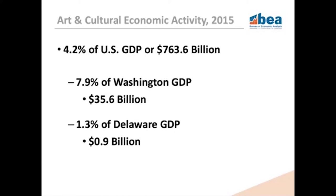According to the estimates most recently released on March 7th of this year, arts and cultural economic activity accounted for 4.2% of U.S. GDP, or $763 billion in 2015. To put that in perspective, compare that to the utilities industry at 1.6%, the mining industry at 1.8%, transportation and warehousing at 3%, construction at 4.1%, and finally the retail trade industry, which contributed 5.8% to U.S. GDP.